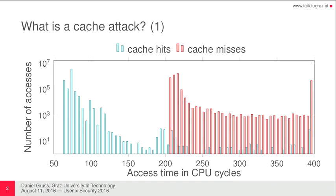So, what is a cache attack? Basically, we look at the timing — the access time of memory access — and there we can distinguish cache hits and cache misses. Cache hits are those memory accesses that are already buffered in the cache. Cache misses are those that have to be served from DRAM, so they take more time. And here you can see that they are very well distinguishable. This is a log scale, so it's really very well distinguishable.